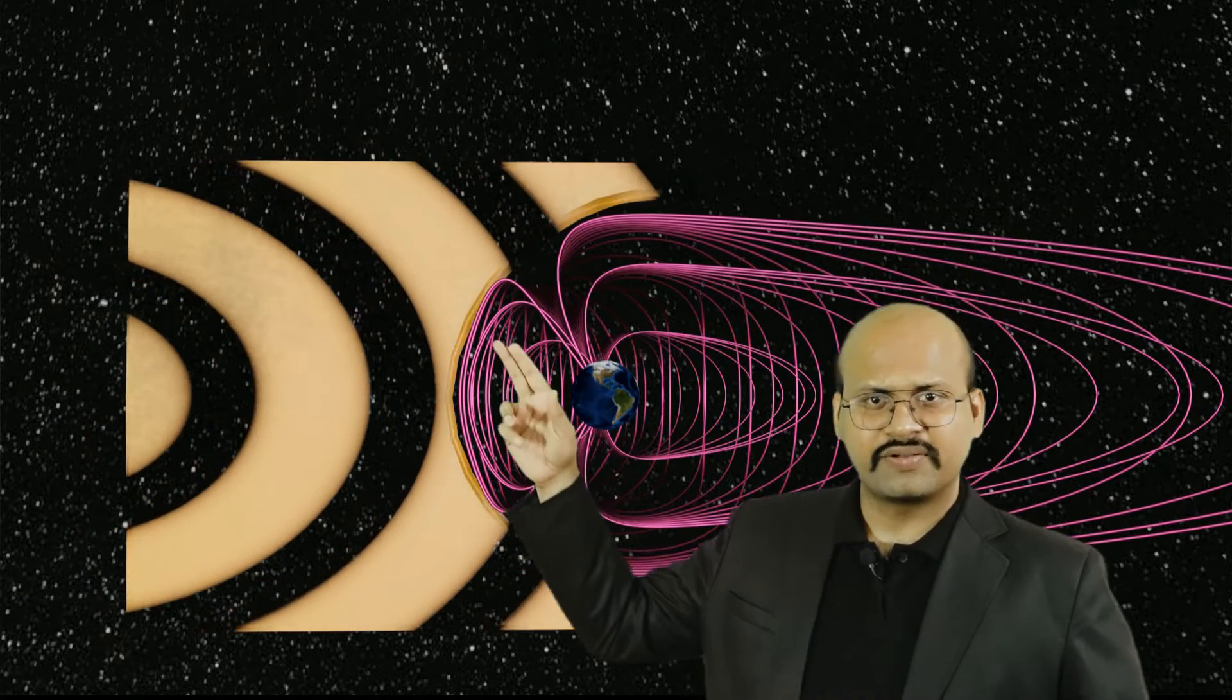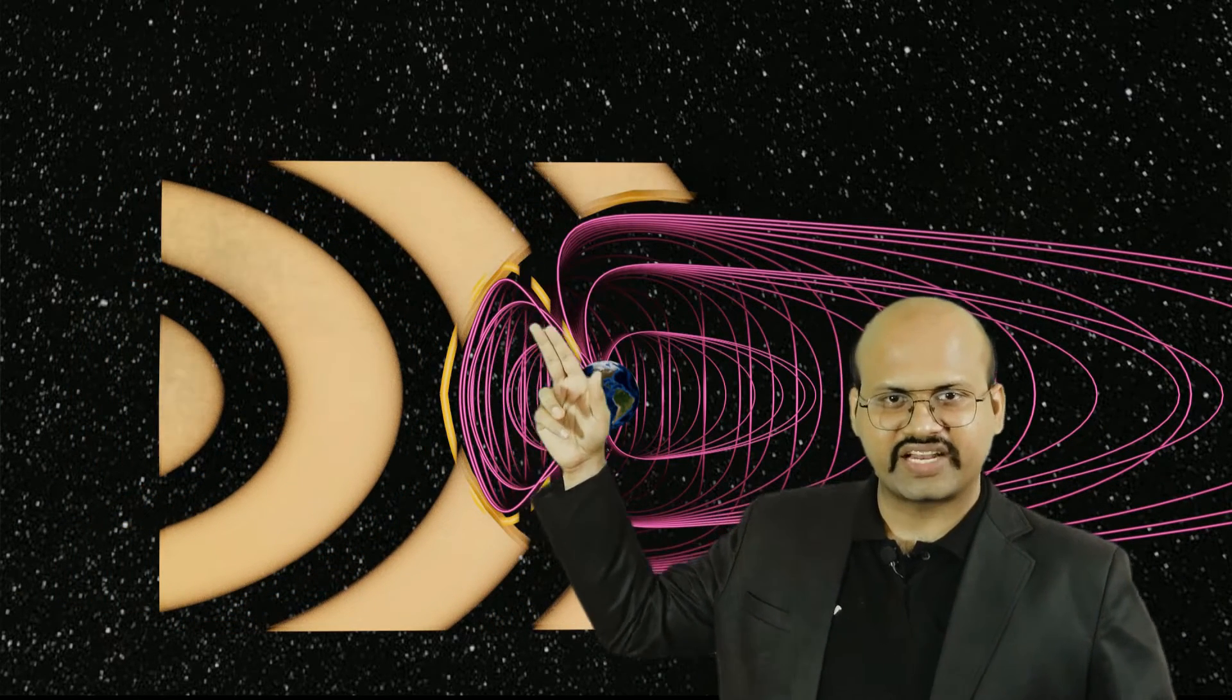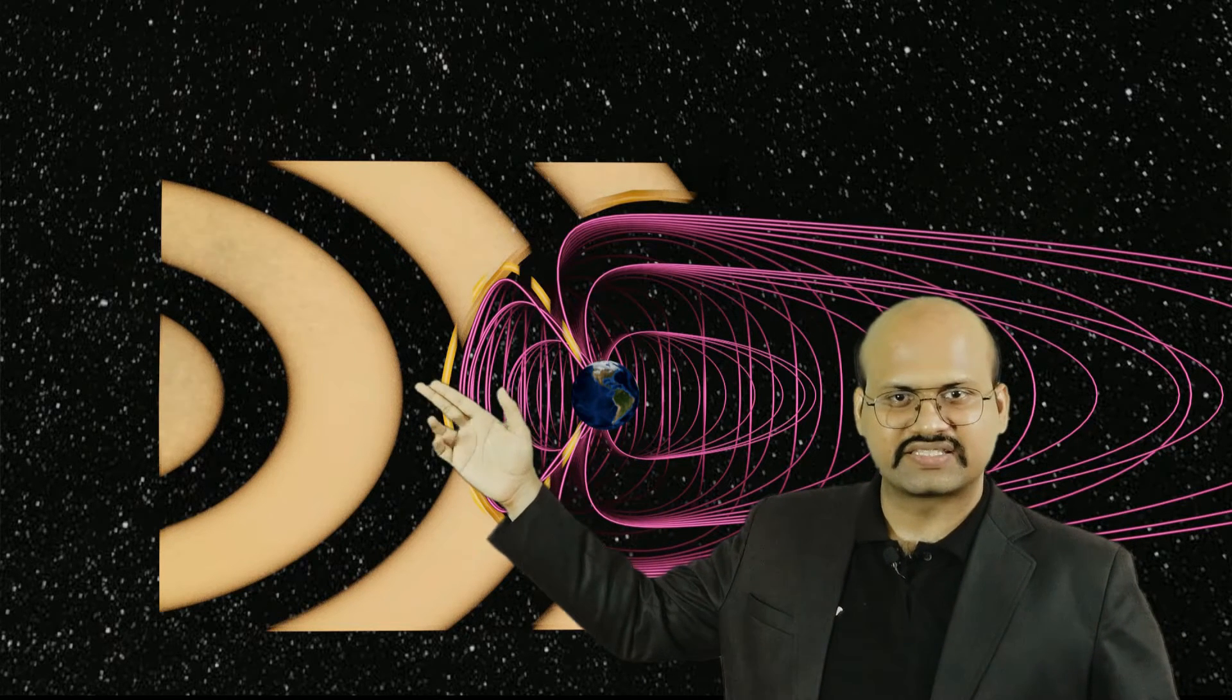However, the magnetic field lines enter our Earth through the magnetic poles, and these charged particles are carried along this magnetic field and enter our Earth in our polar regions. So some of the charged particles are able to enter our atmosphere in the polar regions, and therefore we see these northern lights in the polar regions only.